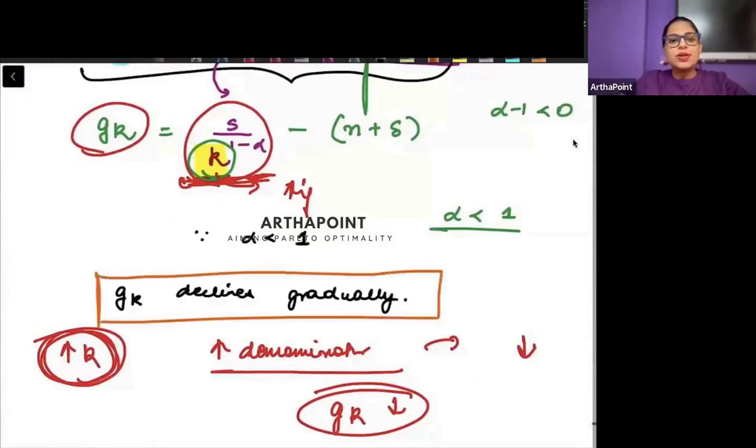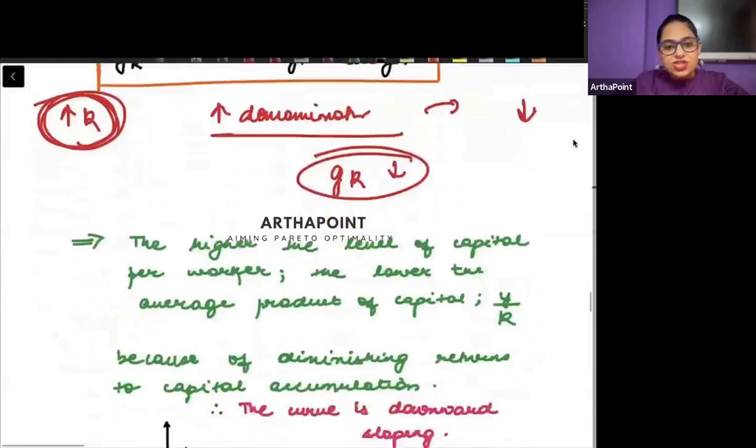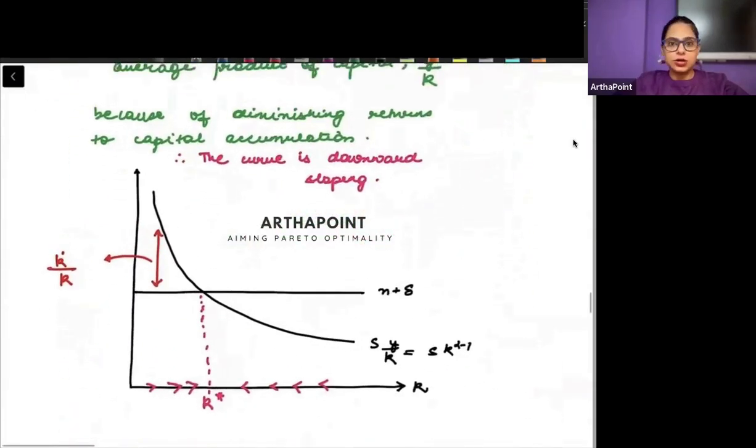The growth rate is declining gradually unless at steady state it becomes zero. We can represent this using another curve.